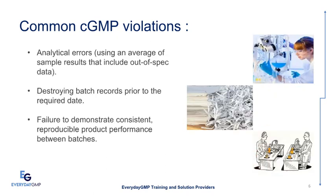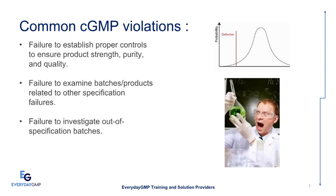Analytical errors include using an average of sample results that include out-of-spec data. Other violations include destroying batch records prior to the required date, failure to demonstrate consistent and reproducible product performance between batches, failure to establish proper controls to ensure product strength, purity, and quality, and failure to examine batches or products related to other specification failures.